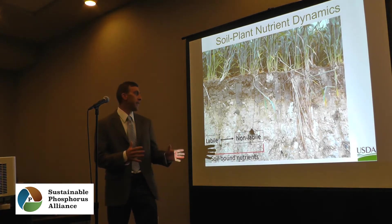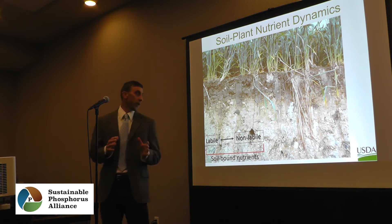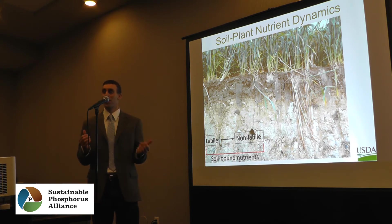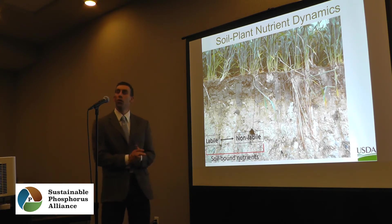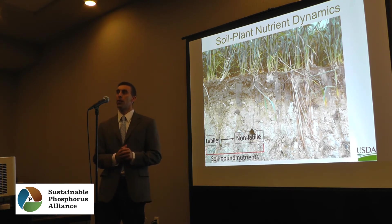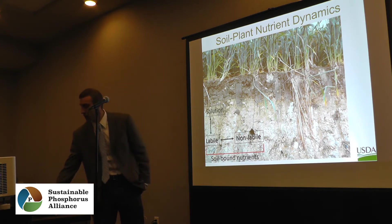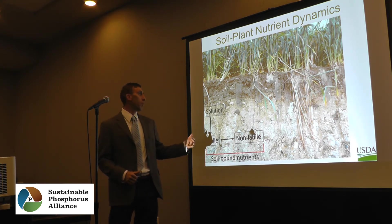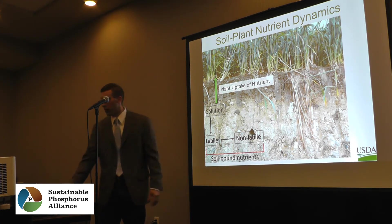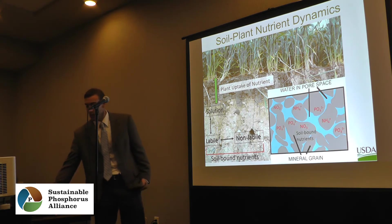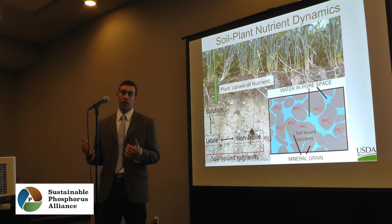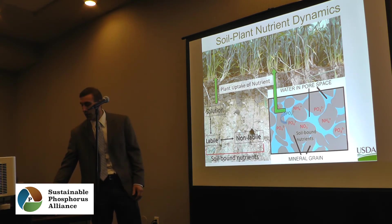If we split soil nutrients into two large crude pools, we'd say there are labile and non-labile pools that are in equilibrium with each other. That labile pool is in equilibrium with the solution pool, and it's the solution pool that plant roots have access to. The soil is essentially the nutrient warehouse at various levels of lability, which supplies the solution for the plant to access.